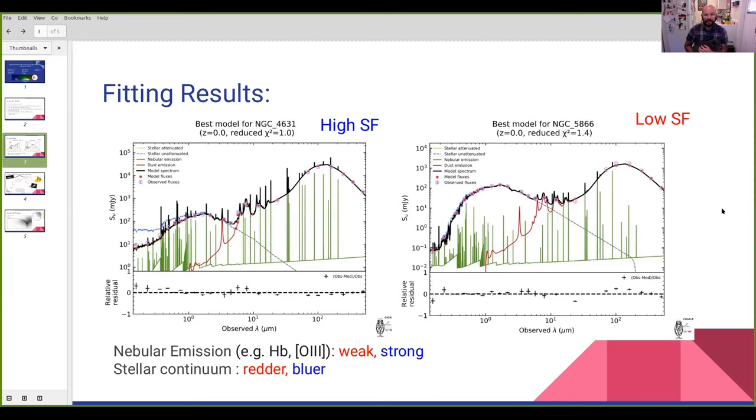Looking at NGC 5866, those lines are practically non-existent. Also, we see that the stellar continuum is much brighter in the UV in the star forming galaxy, as compared to NGC 5866, which has a UV component about two orders of magnitude less than that of 4631.